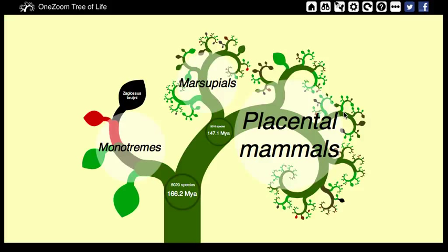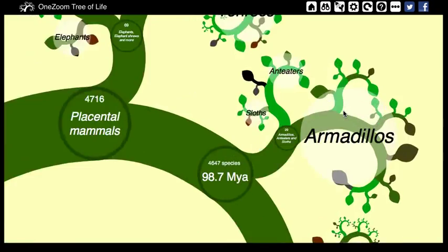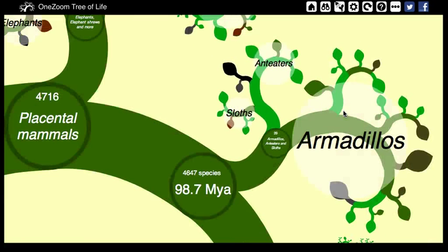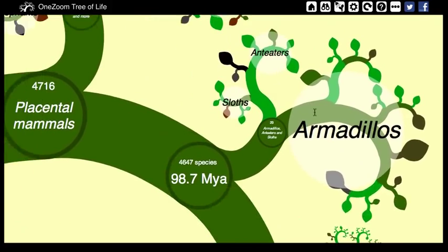To explore OneZoom, you should think of the tree as being like a map. To zoom in on an area of interest around the mouse pointer, you simply scroll up. To zoom out, you scroll down. To move around, you press and hold the left button of the mouse and move the mouse.